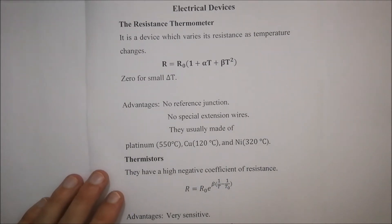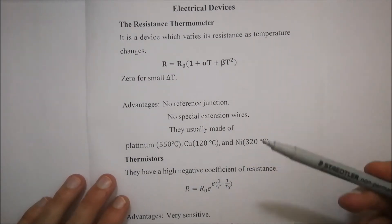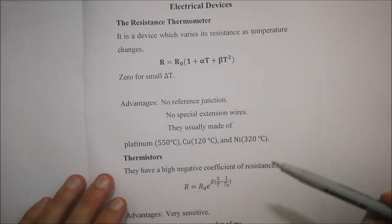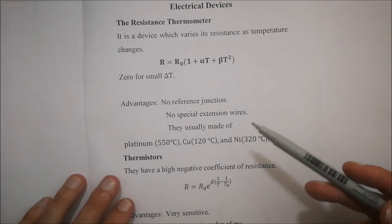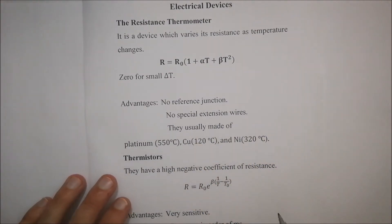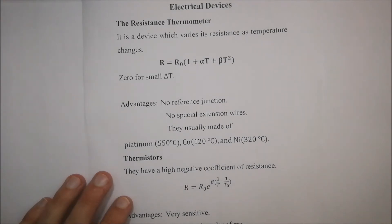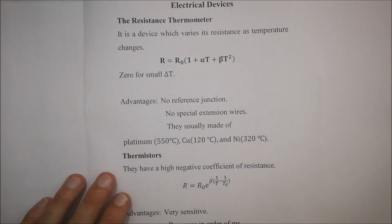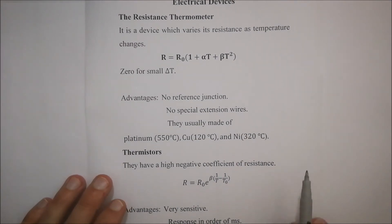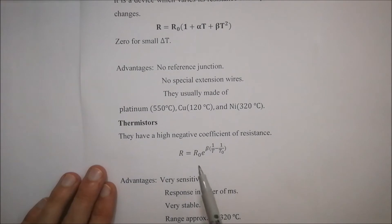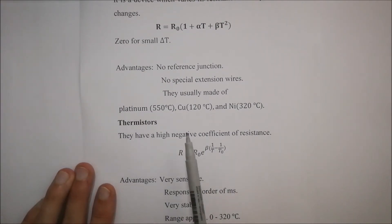The advantages are that there's no reference junction needed, and you'll see where, or at least why this is important. There's no special wires or special extension wires that are needed. You'll see other examples very soon where that is a factor that we need to take into account. And they're usually made of platinum, that's if you want to measure temperatures of about 550 degrees Celsius. Copper for temperature of 120 degrees Celsius, and nickel for temperature of 320 degrees Celsius.